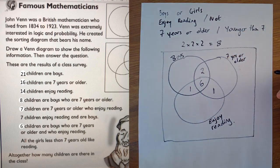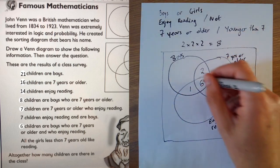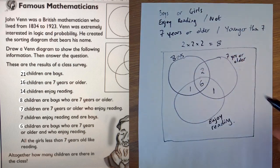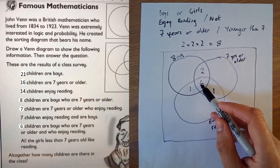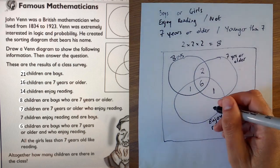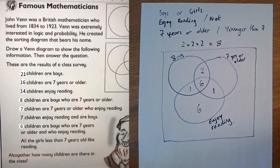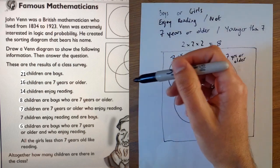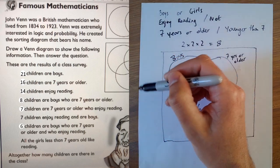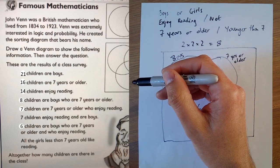Fourteen children enjoy reading. So the whole of this ring has to add up to 14. So far we've got seven, eight. What do we have to add on to eight to make 14? It's six. So we're going to put a six there. And I would tick these off as I go along to be honest. I can't do that I'm afraid.